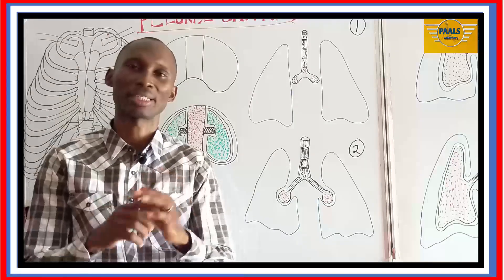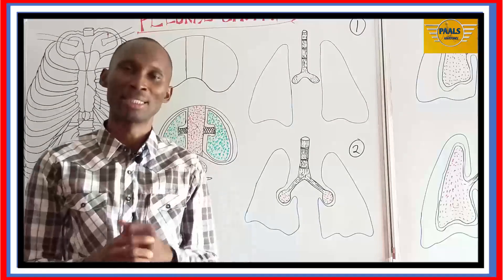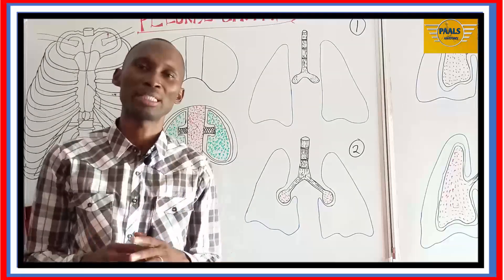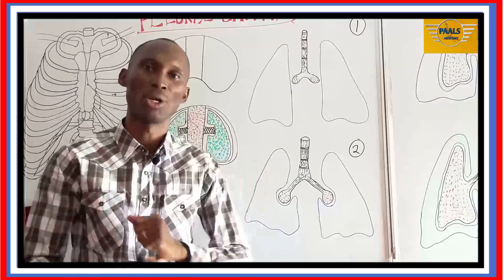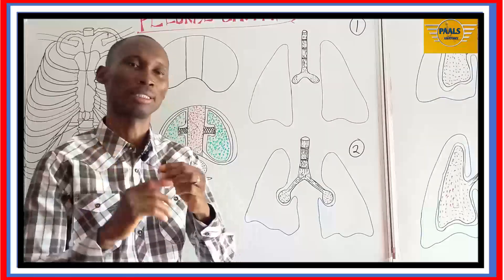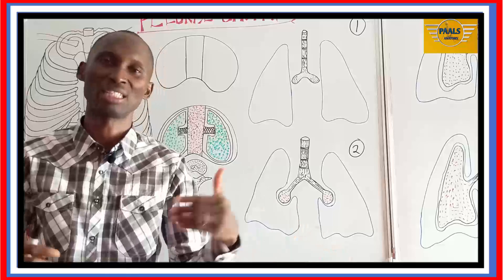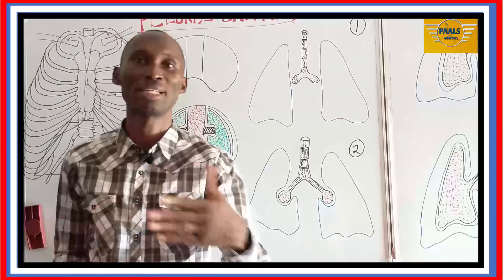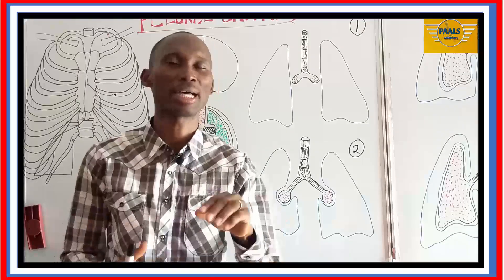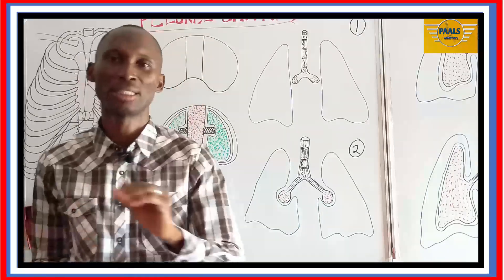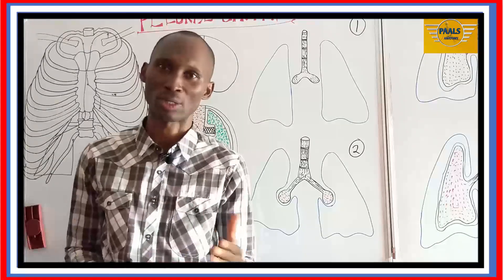The lungs are wrapped by two layers. The name of that layer is pleural membrane. What is the pleural membrane? It is a serous membrane that covers or lines the whole lungs and also the chest cavity. This membrane is serous — meaning it has mesothelial cells, which are flat or squamous cells. These mesothelial cells produce fluids that are watery; that's what serous means.